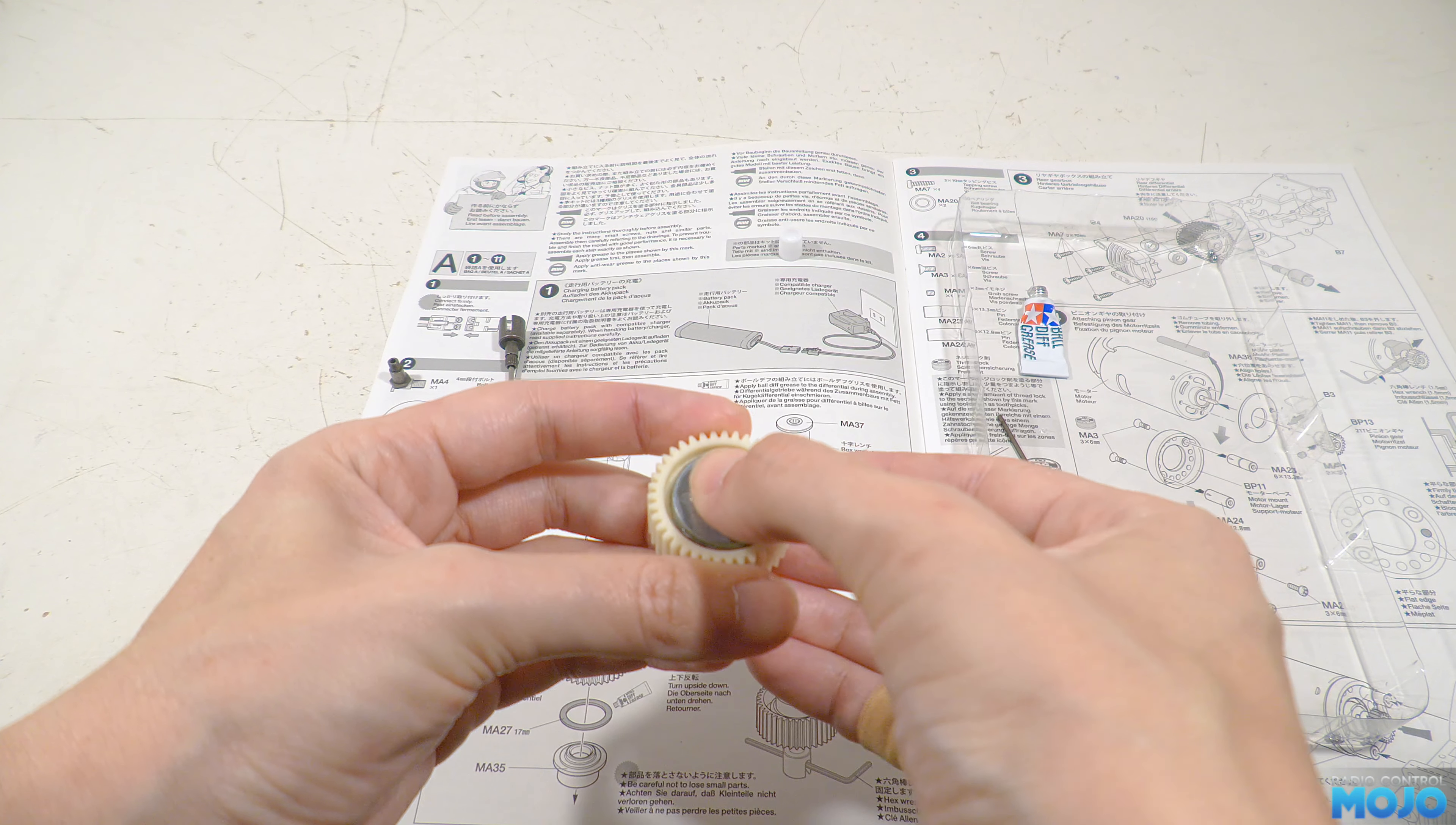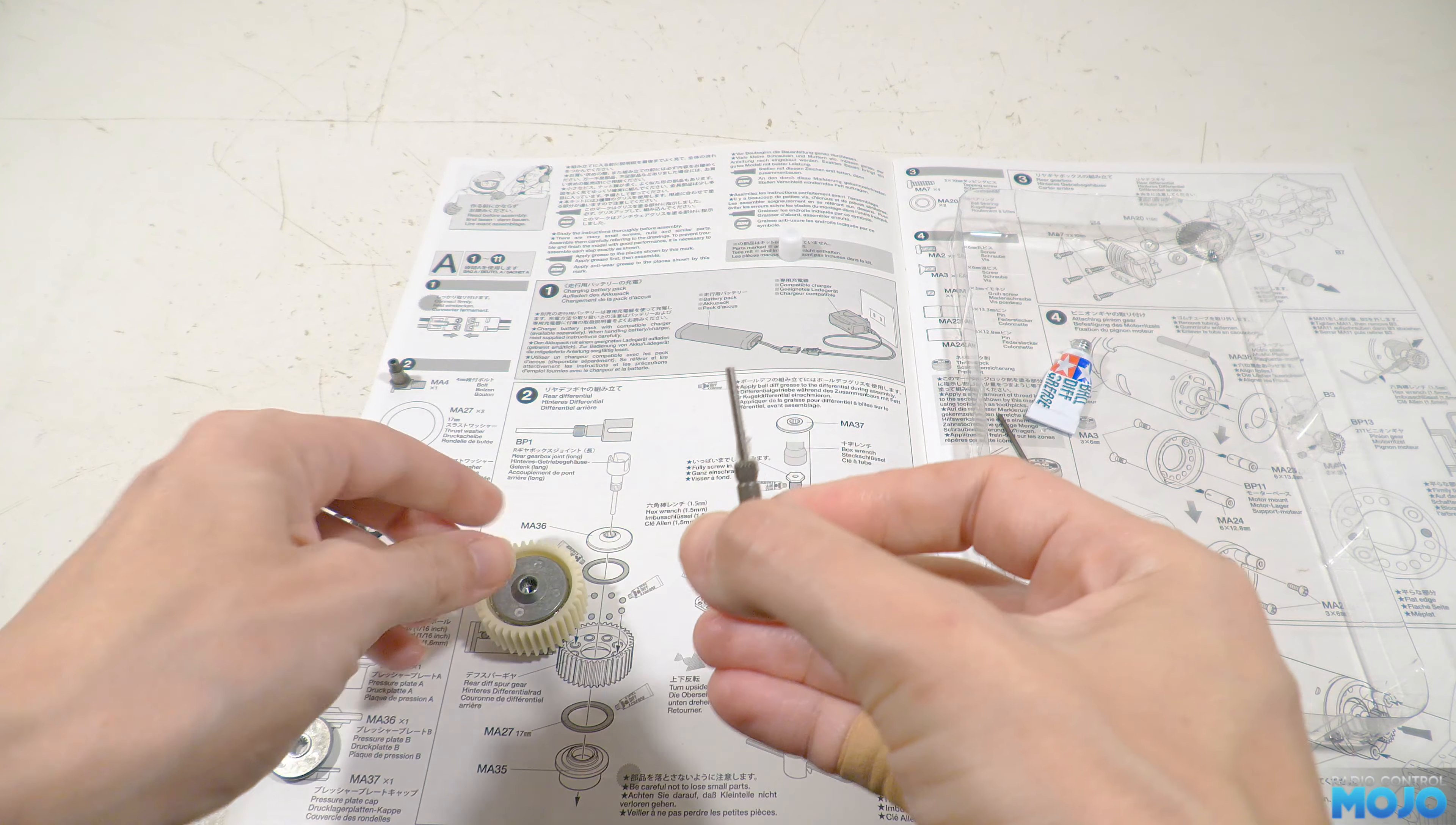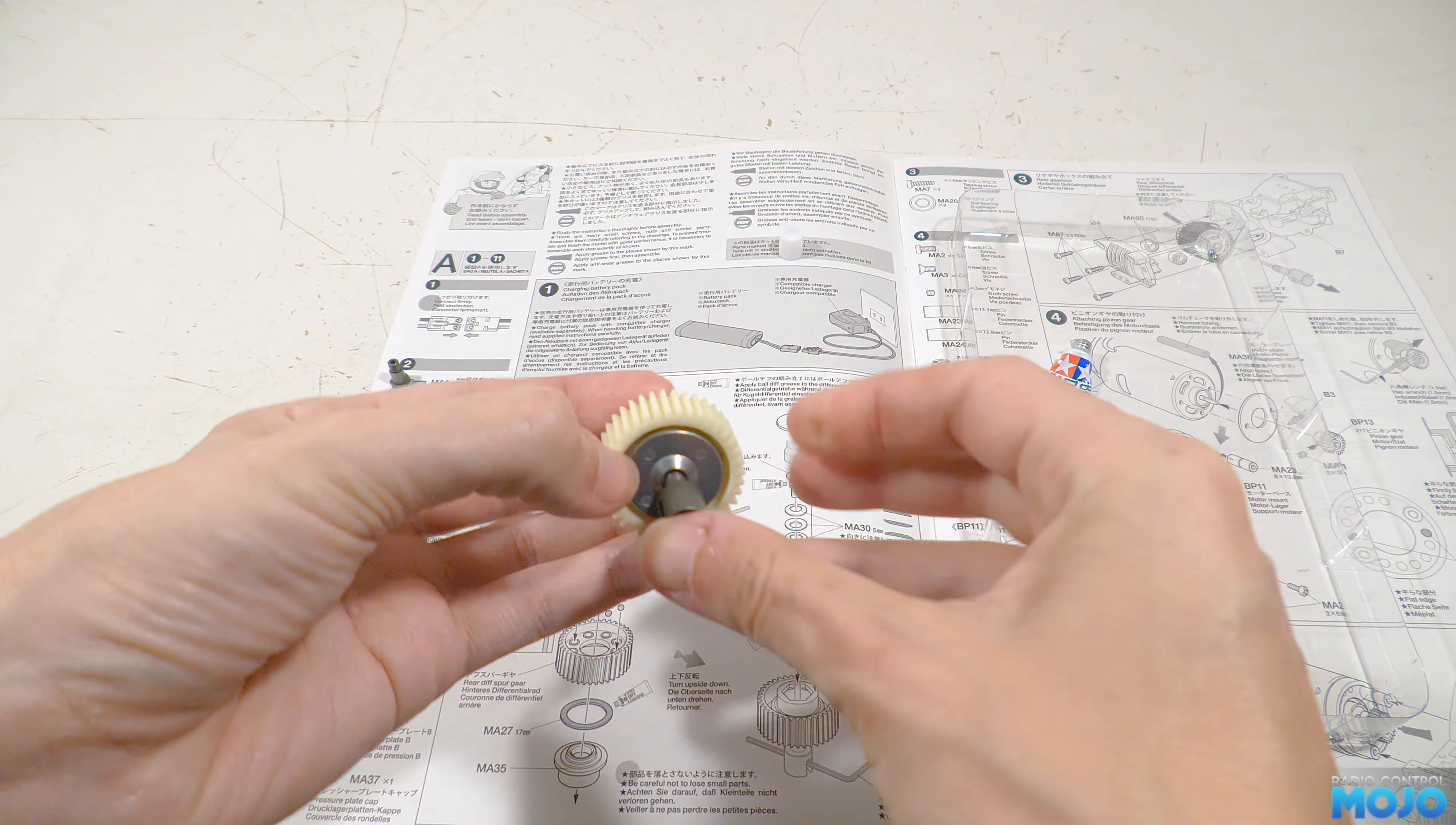It's going to be a bit sketchy until the drive cup goes in though. So we're going to add a little bit of grease around the splines, then pop it into the splined hole in pressure plate B so it lines up all the parts. It's going to be a bit wobbly still, but it should be stable enough to continue the assembly.